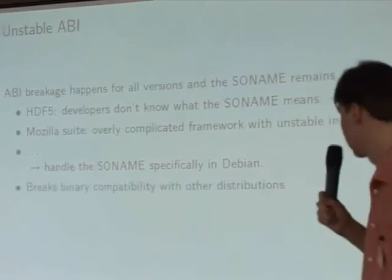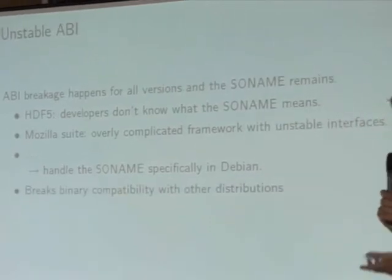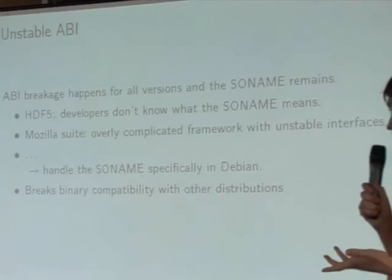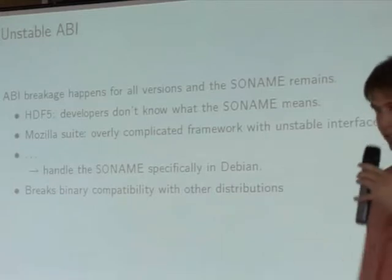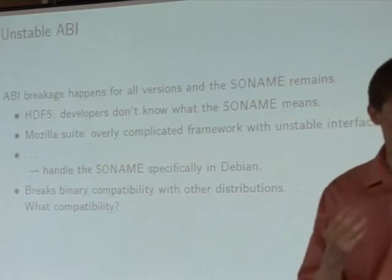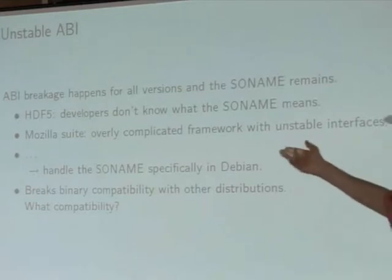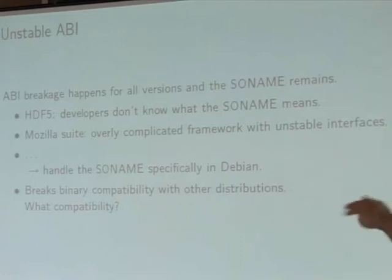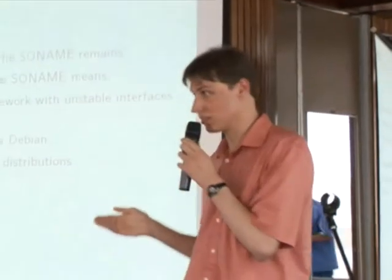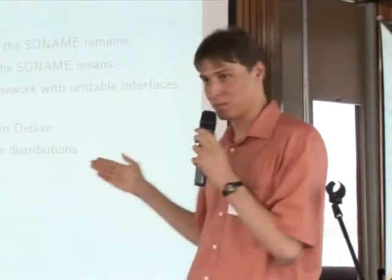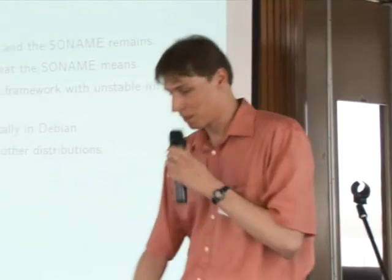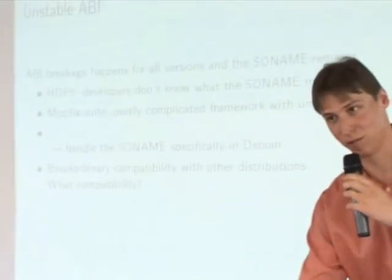Using only the static library has a drawback: it breaks binary compatibility with other distributions shipping the same library. But the answer is: what compatibility? Compatibility between distributions for Mozilla, which is built in C++, when different compilers have incompatible ABIs? There is no compatibility in that case. So you can break it, and it's actually better if you do.